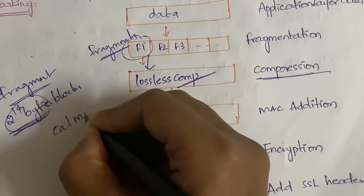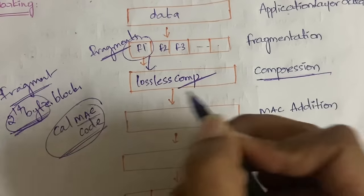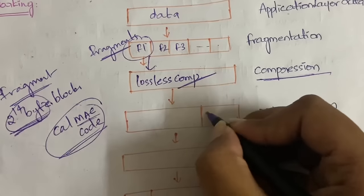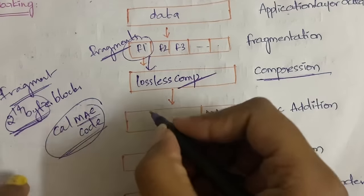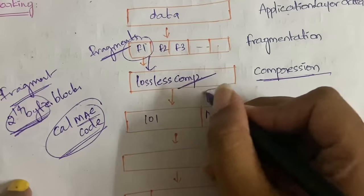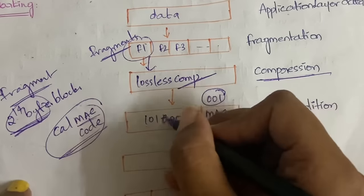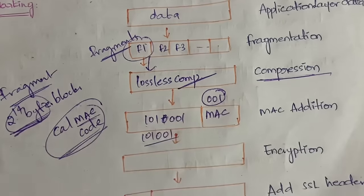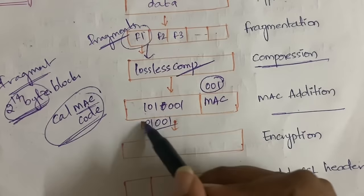After doing the lossless compression, you need to calculate the MAC code for the data. Once you calculate the MAC code you need to append that MAC code at the end of the data. For example, if our data is 101 and the MAC code calculated is 001, you append it so it becomes 101001. You attach the MAC code at the end of the original data. This MAC addition is done to ensure message integrity.